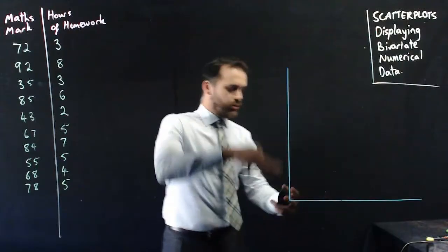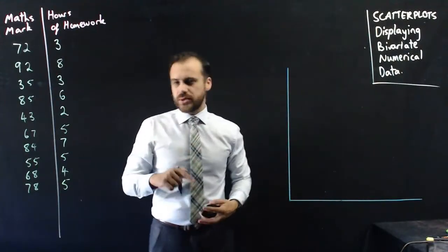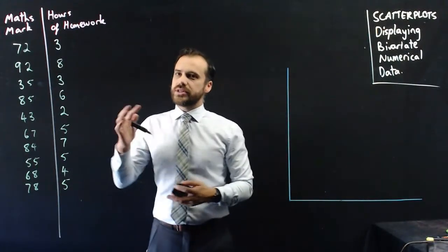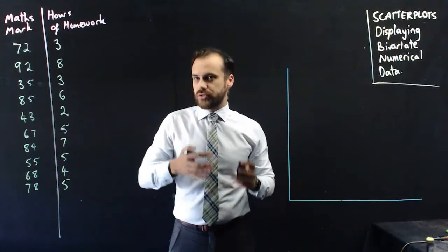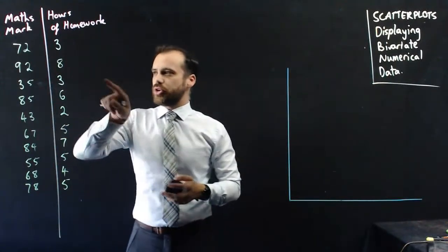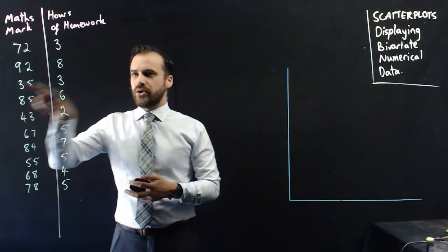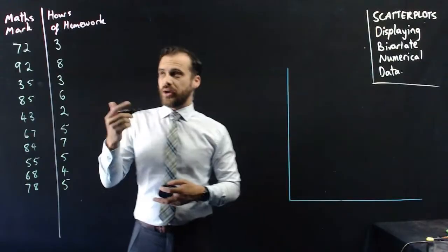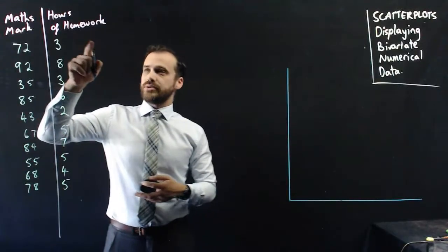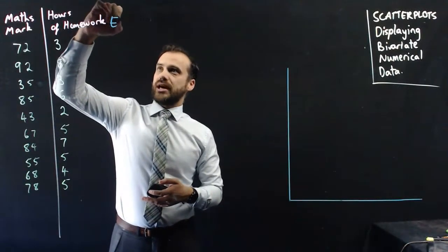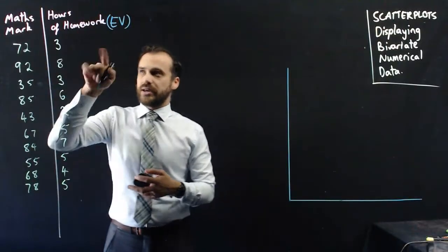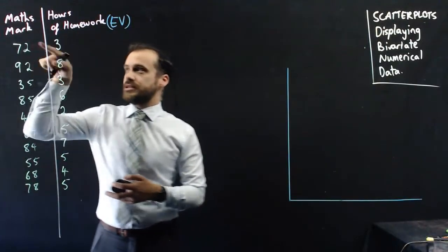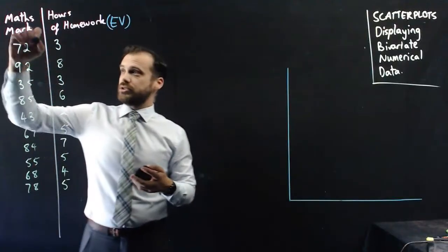And we're going to place it on this x and y axis, and the first question we have to ask ourselves is, which is the explanatory variable, and which is the response variable? Are they doing homework because they're getting these marks, or are they getting these marks because they're doing the homework? And hopefully you can see that hours of homework is the explanatory variable. This is the thing that explains this.